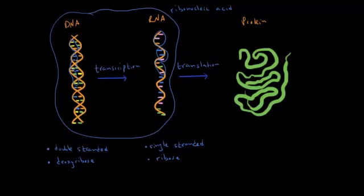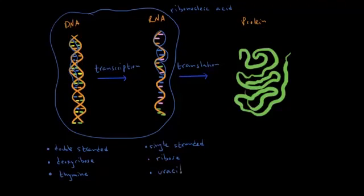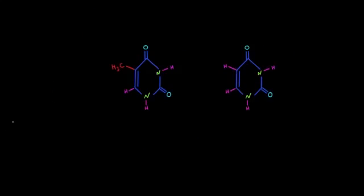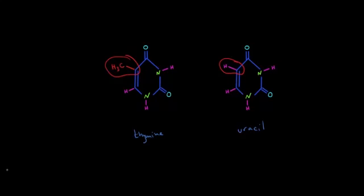Another difference between DNA and RNA is that in DNA one of the nitrogen bases is thymine, a pyrimidine. In RNA, wherever we would normally have thymine, we instead have uracil, which is also a pyrimidine. The only difference between these two molecules is that thymine has a methyl group where uracil has only a hydrogen.